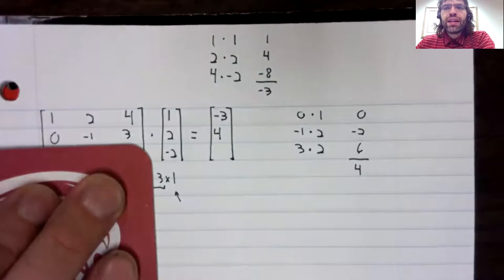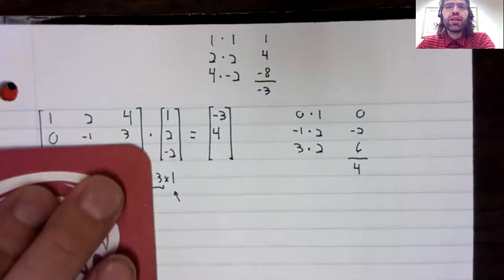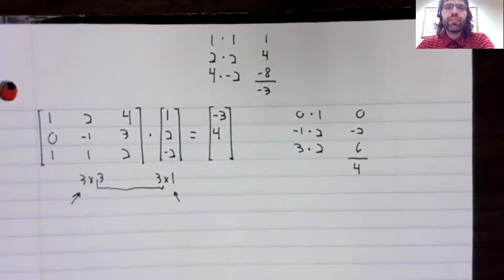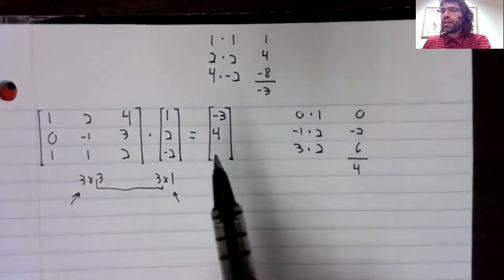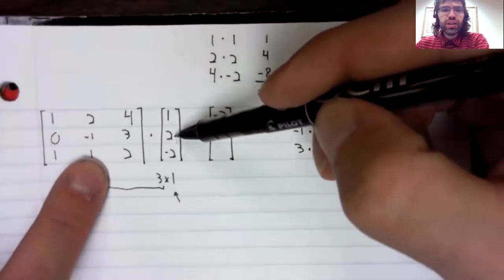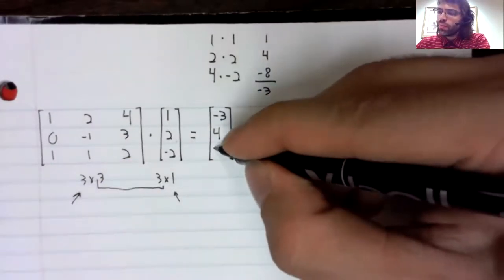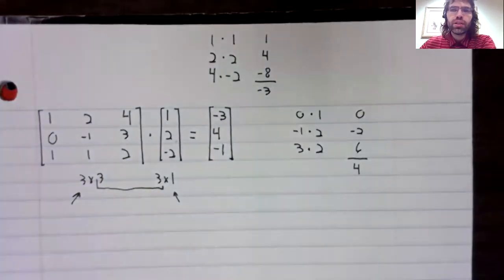The advantage of this method is that if you're working with fairly small vectors and matrices by hand, it tends to be relatively quick. So for example, this entry here: one plus two is three, minus four is negative one. When you get a little practice...